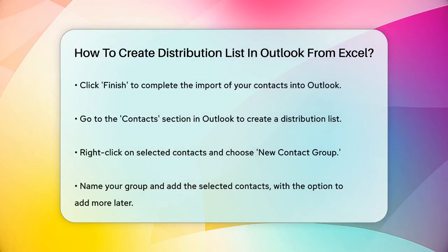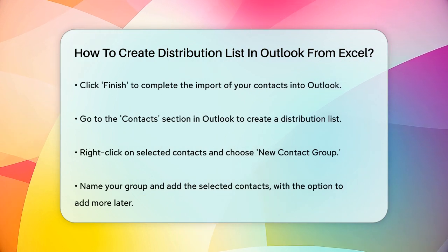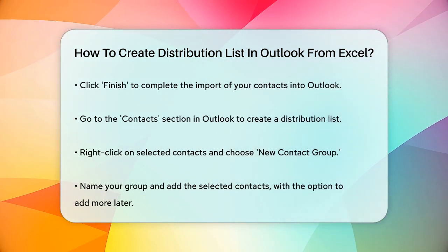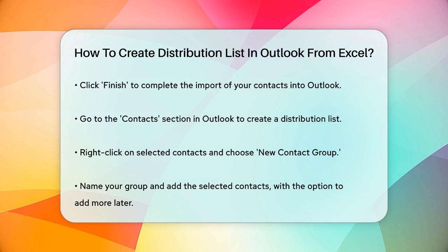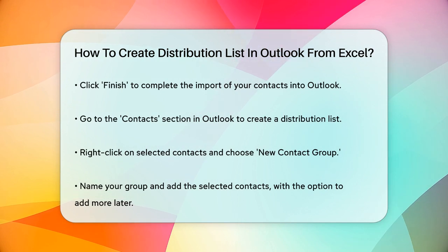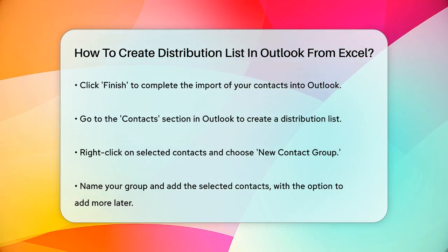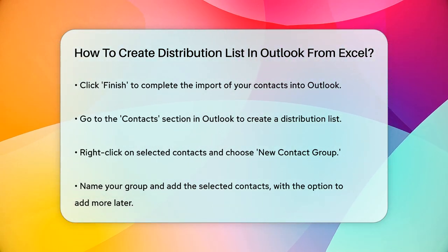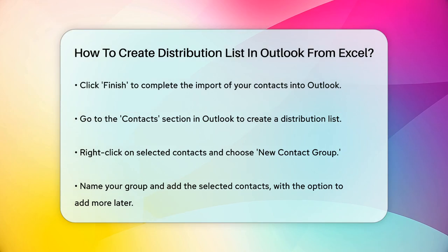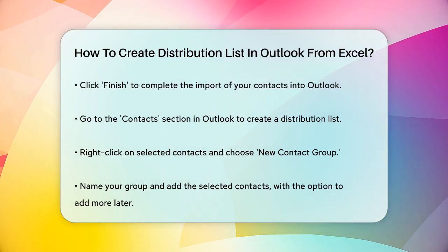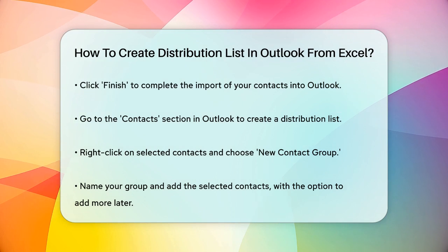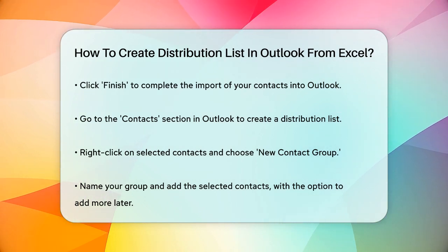Now your contacts are imported into Outlook. To create a distribution list, go to your Contacts section, select the contacts you want to include in the list, and right-click to choose New Contact Group. Name your group and add the selected contacts to it. You can also add more contacts later by dragging and dropping them into the group.